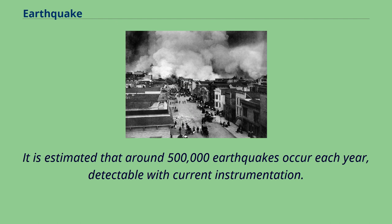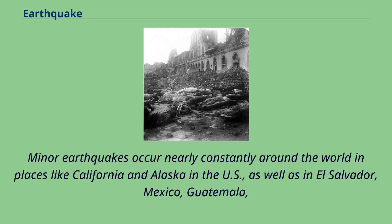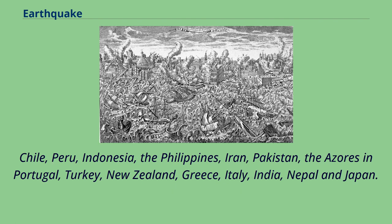It is estimated that around 500,000 earthquakes occur each year, detectable with current instrumentation, and about 100,000 of these can be felt. Minor earthquakes occur nearly constantly around the world in places like California and Alaska in the U.S., as well as in El Salvador, Mexico, Guatemala, Chile, Peru, Indonesia, the Philippines, Iran, Pakistan, the Azores in Portugal, Turkey, New Zealand, Greece, Italy, India, Nepal, and Japan.